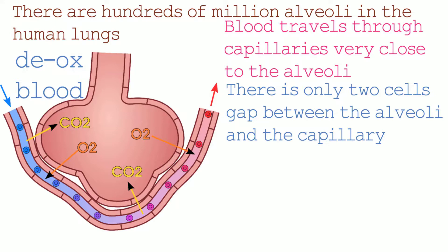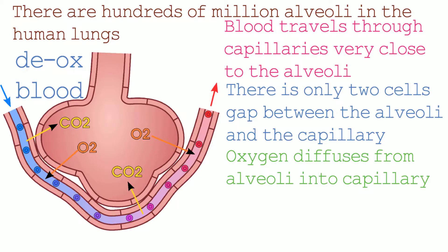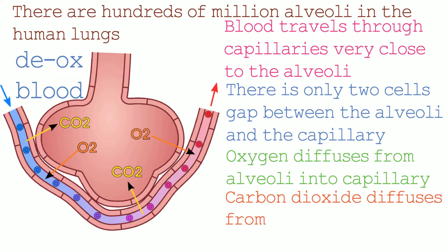This means that there is a higher concentration of oxygen in the alveoli compared to the concentration of oxygen in the capillary. This results in oxygen diffusing from the alveoli into the capillary. There is a higher concentration of carbon dioxide in the capillaries compared with the alveoli. This leads to carbon dioxide diffusing from the capillaries to the alveoli. So oxygen diffuses out of the alveoli into the capillaries and carbon dioxide diffuses into the alveoli from the capillaries.